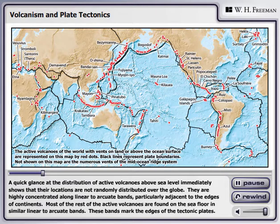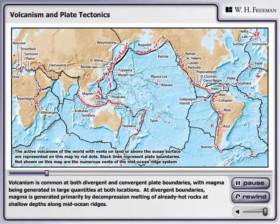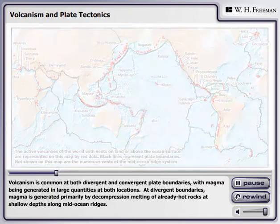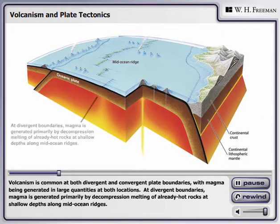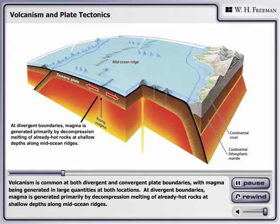These bands mark the edges of the tectonic plates. Volcanism is common at both divergent and convergent plate boundaries, with magma being generated in large quantities at both locations. At divergent boundaries, magma is generated primarily by decompression melting of already hot rocks at shallow depths along mid-ocean ridges.